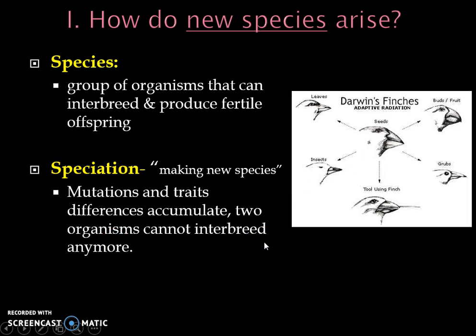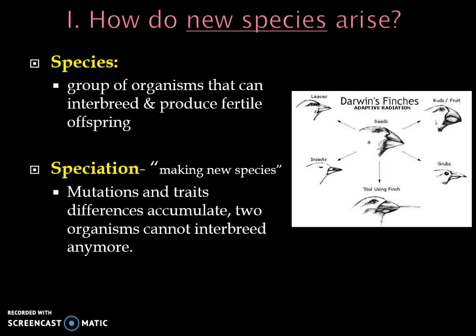We'll go over some examples of how this happens. Darwin saw this for the very first time on the Galapagos. He noticed that finches all looked very different and were eating different things. Because they were so different — with different shaped beaks and different diets — they became different species. A lot of that was driven by traits that diverged through many different mutations until eventually they couldn't breed together.